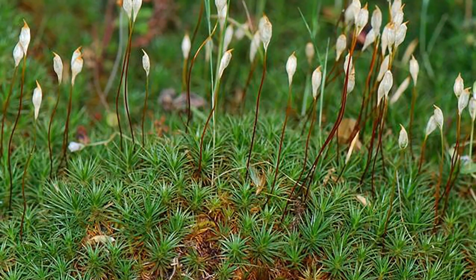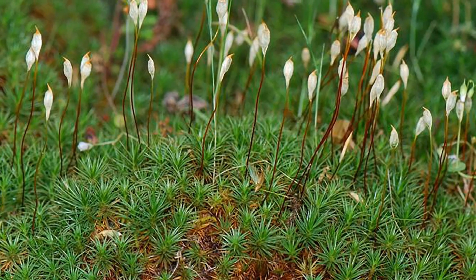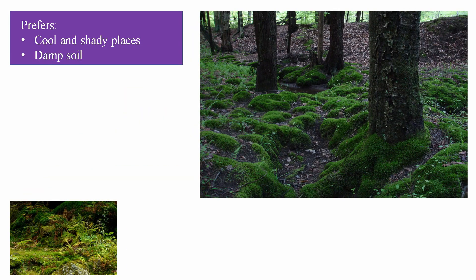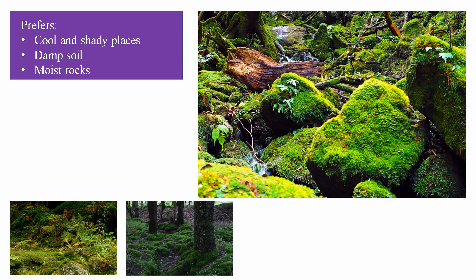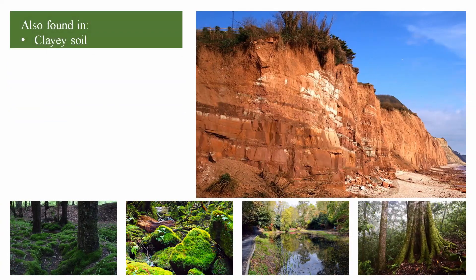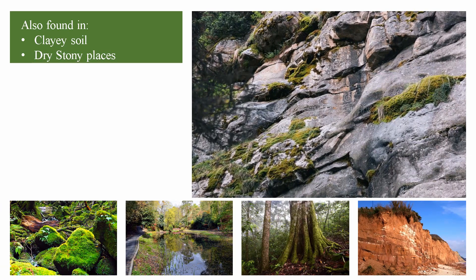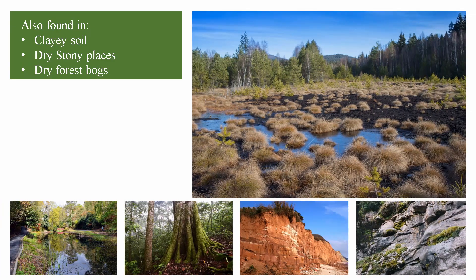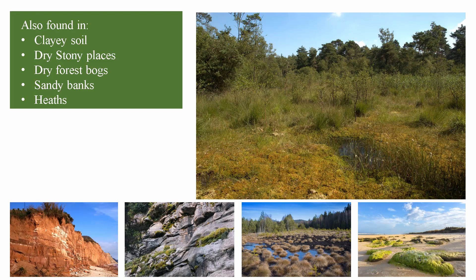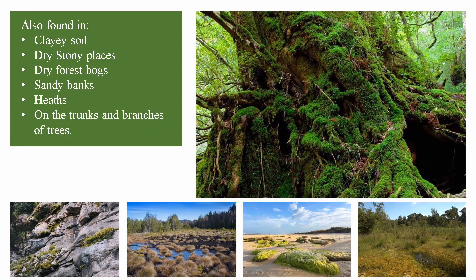Polytrichum occurs in diverse habitats. However, like other mosses, it prefers cool and sandy places and grows on damp soil, moist rocks, in swampy places, and under the shade of other plants. Some species grow in clay soil liable to desiccation or on dry stony places, dry forest floors, and others on sandy banks, heaths, or on the trunks and branches of trees.